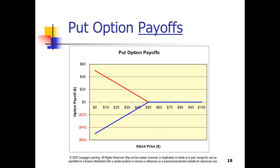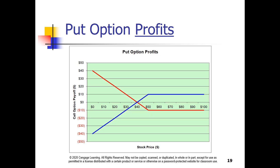Since the stock price is bounded below by zero, there is an upper bound on the payoff for the put holder, since the maximum payoff to the put holder is X minus P. If P is zero, the maximum is X, the strike price. Including the option premium shifts the lines. The put holder's loss is bounded by the premium paid, shown as the lower red line.